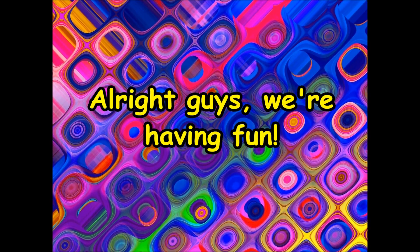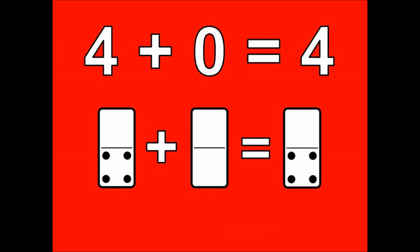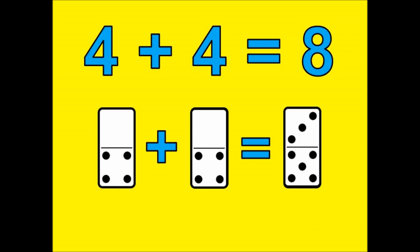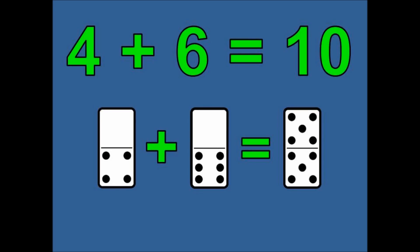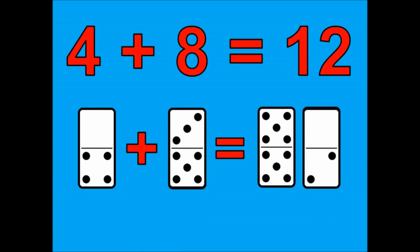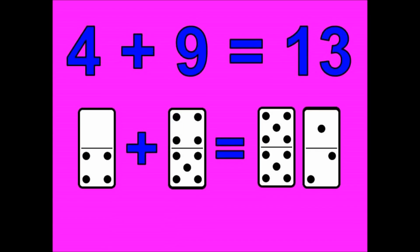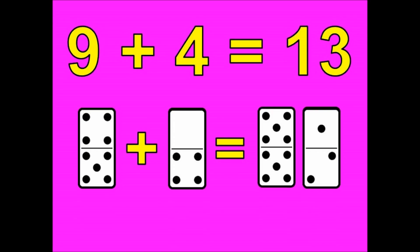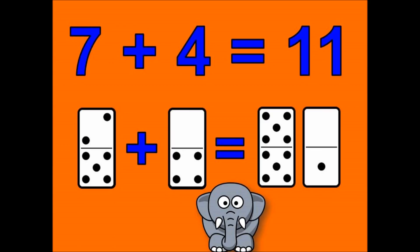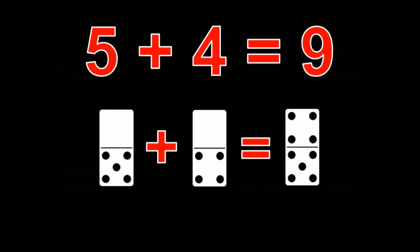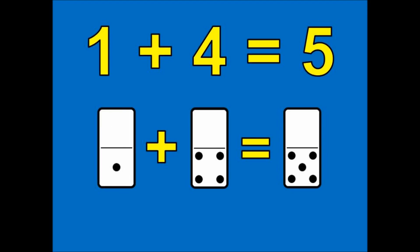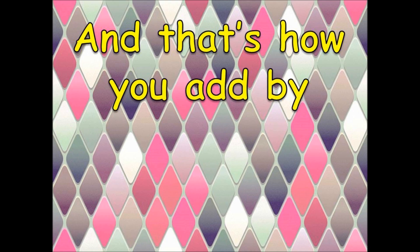All right guys, we're having fun. Now let's start at the beginning, go all the way up and all the way back down. You can do it, let's go. Four plus zero is four. Four plus one is five. Four plus two is six. Four plus three is seven. Four plus four is eight. Four plus five is nine. Four plus six is ten. Four plus seven is eleven. Four plus eight is twelve. Four plus nine is thirteen. Four plus ten is fourteen. Now let's go right back down. Ten plus four is fourteen. Nine plus four is thirteen. Eight plus four is twelve. Seven plus four is eleven. Six plus four is ten. Five plus four is nine. Four plus four is eight. Three plus four is seven. Two plus four is six. One plus four is five. Zero plus four is four. And that's how you add by four.